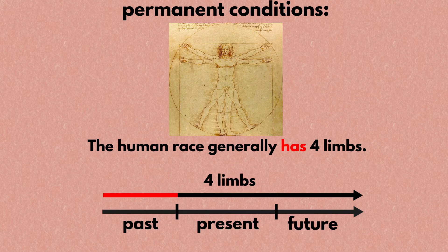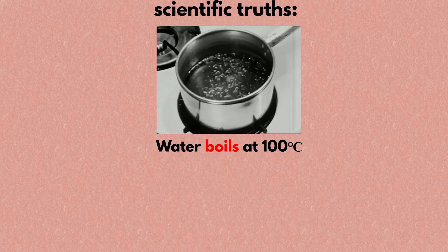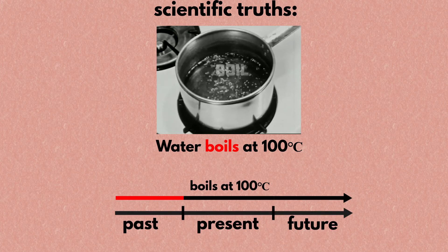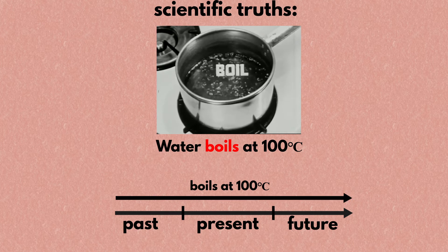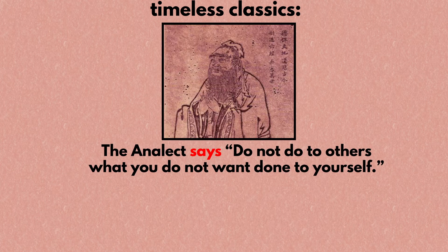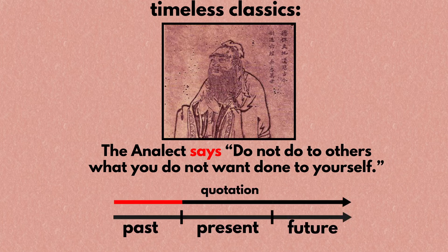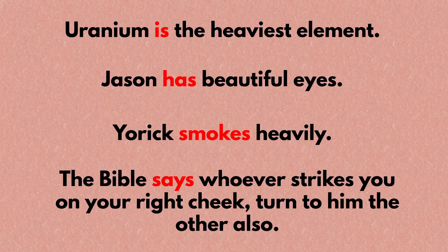The second case is permanent conditions, as in 'the human race generally has four limbs.' The third case is scientific truth, as in 'water boils at 100 degrees Celsius' — water boiled at that temperature in the past, boils now, and will boil in the future. The fourth case is timeless classics, as in 'the Analects says: do not do to others what you do not want done to yourself.' Use the simple present when quoting classics. Here are some more example sentences.